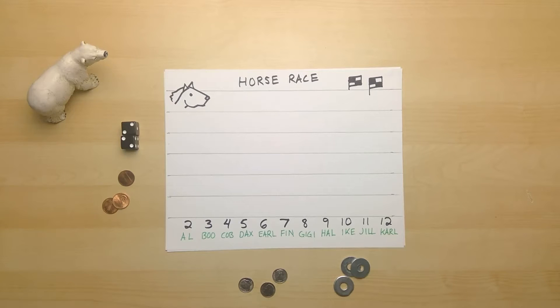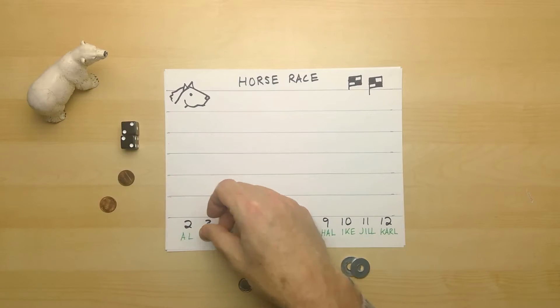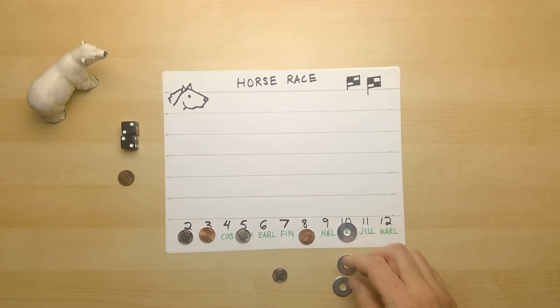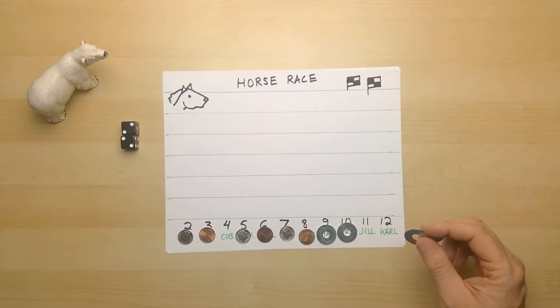And we'll need some dice. Now before we begin the race, each player needs to choose the horses they believe might win. So Copper starts by choosing Boo. Silver chooses Dax. And Donut chooses Ike. Copper chooses Gigi. Silver chooses Al. And Donut chooses Hal. Copper chooses Earl. Silver chooses Finn. And Donut chooses Carl.